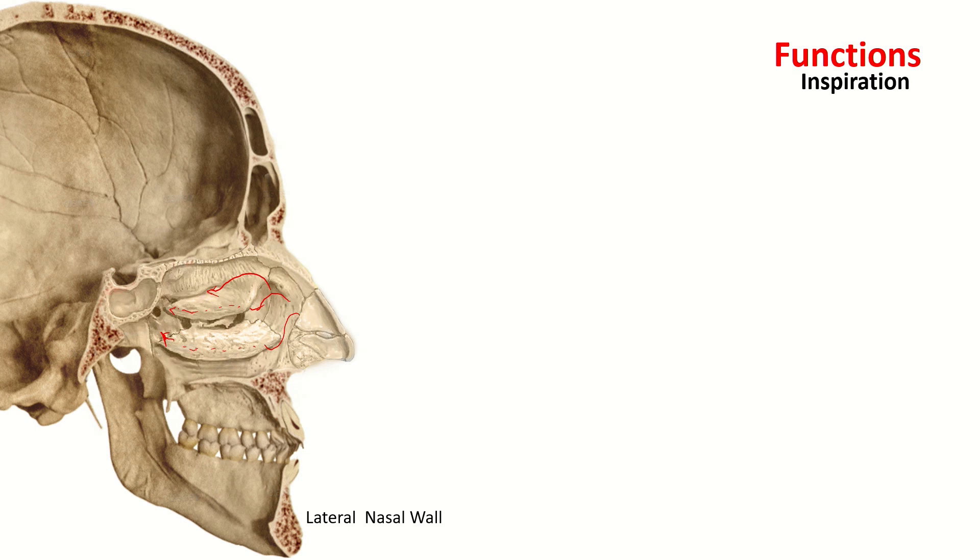So when we inhale, what happens is the air passes through under the nasal meatus. It passes through the entire nasal cavity. The nasal conchae increase the surface area to help moisturize and provide warmth to the air.